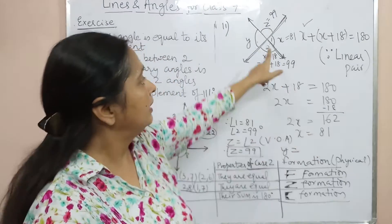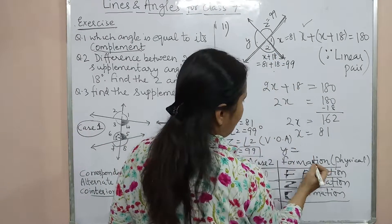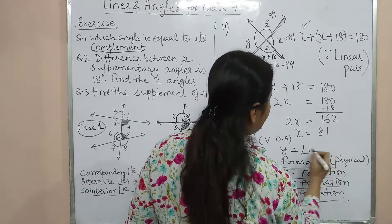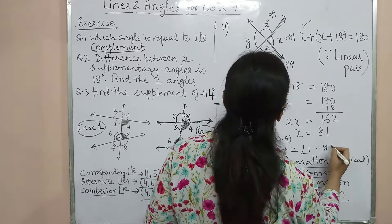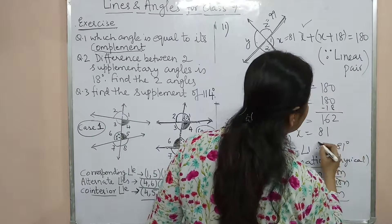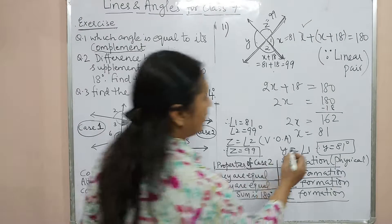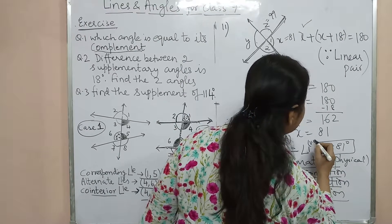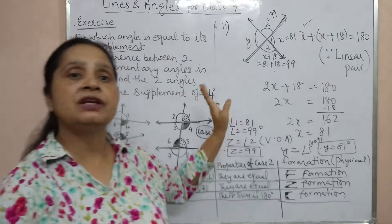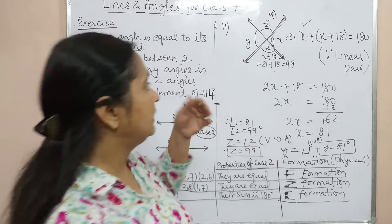To summarize the method: first use angles 1 and 2 with the linear pair property to find X, then get the values of angle 1 and angle 2. Then use vertically opposite angles to find Z equal to angle 2, and Y equal to angle 1. Always be very logical and correct when writing your answers.